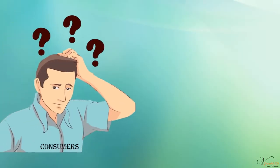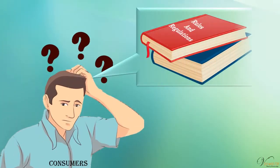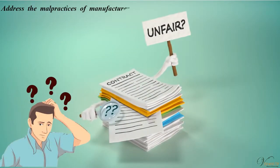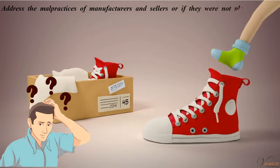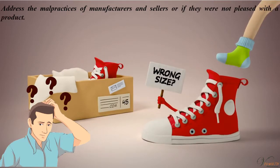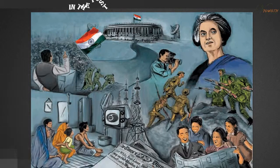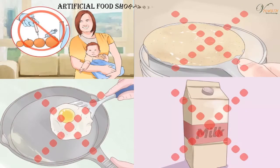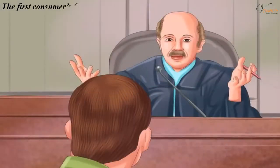Initially, consumers had no means or rules and regulations to address the malpractices of manufacturers and sellers, or if they were not pleased with a product. In the post-independence period in India, there were artificial food shortages and adulteration. The first consumers' forum was formed in the 1960s.